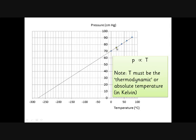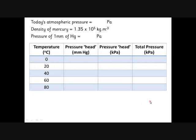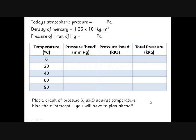Some people think that if you take a gas at 20 degrees C and heat it to 40 degrees C, that's twice as hot. Hopefully you can see now that's not true, because 20 degrees C is 293 Kelvin and 40 degrees C is 313 Kelvin. In terms of absolute temperature, the gas isn't actually all that much hotter.